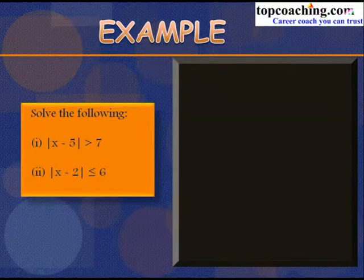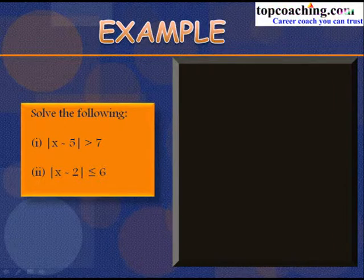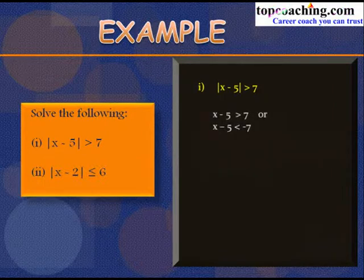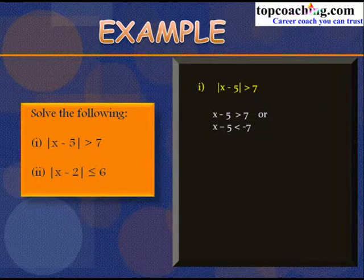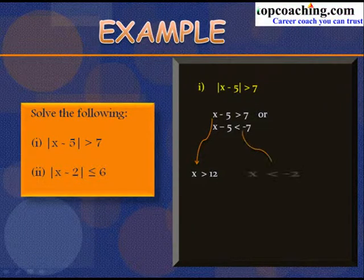To solve |x − 5| > 7: from the definition of modulus, either x − 5 > 7 (quantity positive) or x − 5 < −7 (quantity negative). From x − 5 > 7, we get x > 12. From x − 5 < −7, we get x < −2.